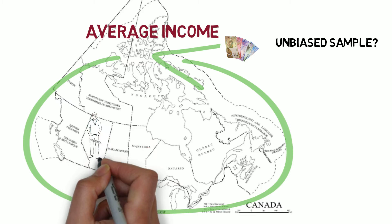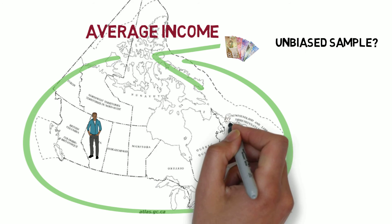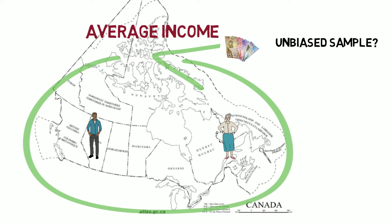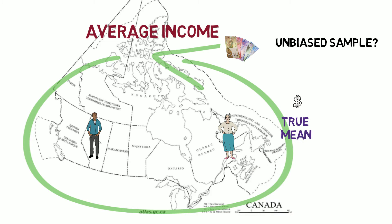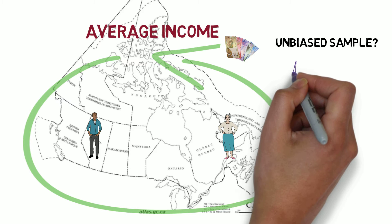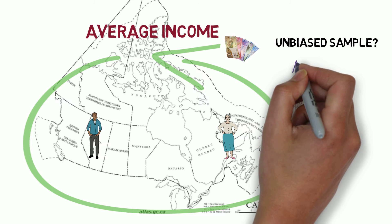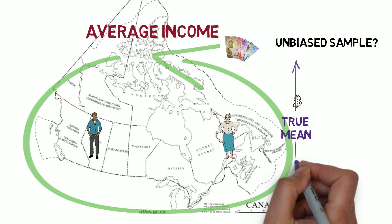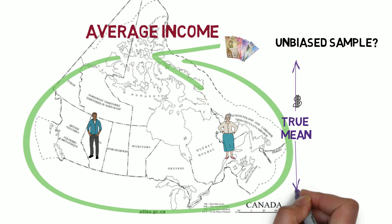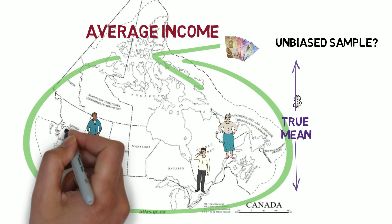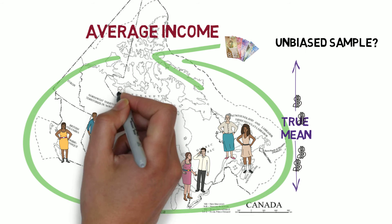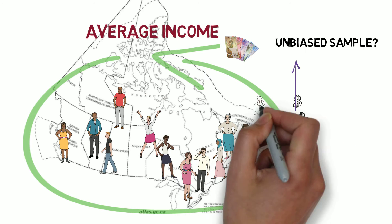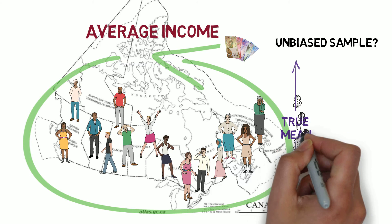To continue with our example, suppose we selected two adults at random from the whole population. By basic laws of statistics, the average of their incomes would be an unbiased estimate of the true population mean. But for any specific sample, we would not expect the sample mean to be the same as the population mean. The difference between the sample and population mean, however, would not be systematically too high or too low.